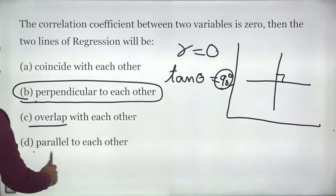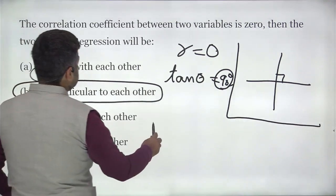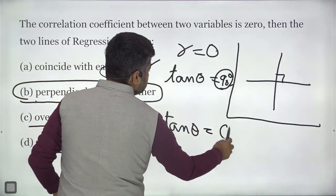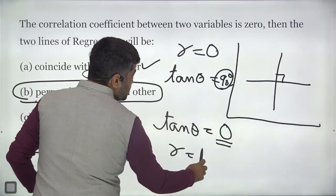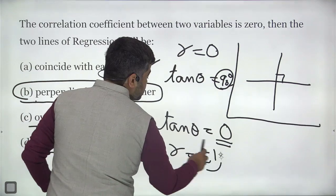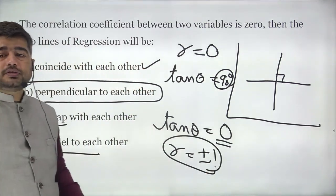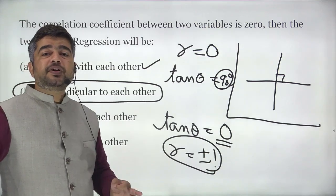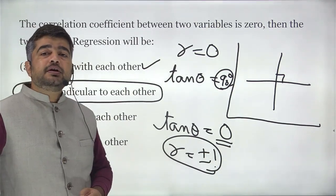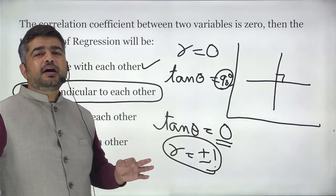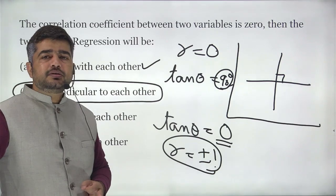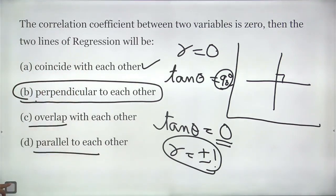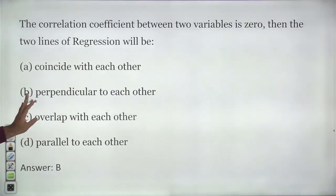The lines are overlapping or parallel to each other when tan(theta) is 0, meaning they are coincident. That happens when r is plus or minus 1 — when the variables are perfectly correlated, the two regression lines coincide. When they are strongly correlated they are almost parallel to each other. Answer will be B — perpendicular to each other.